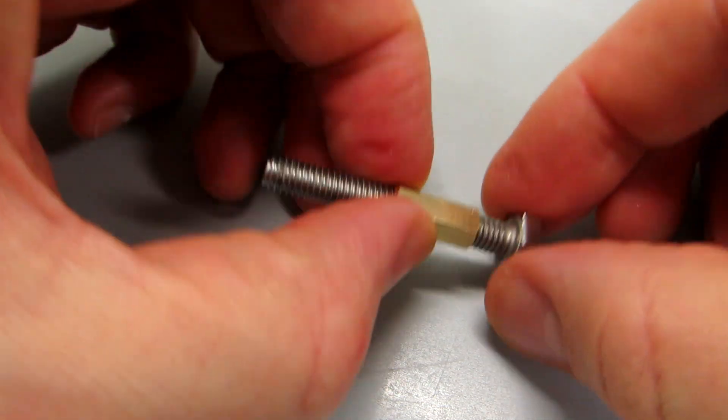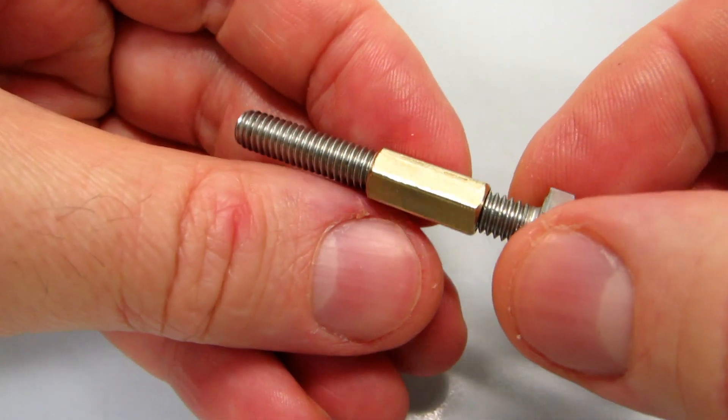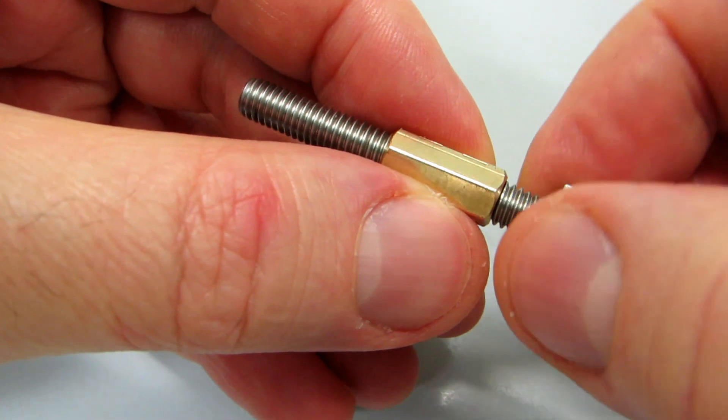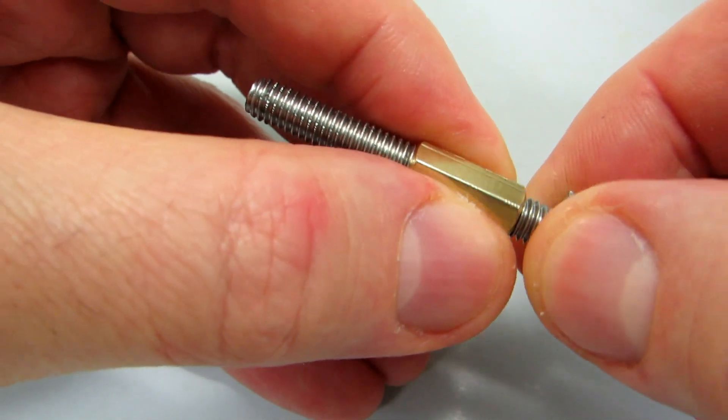Welcome to my impossible screw. This is a screw that can only be turned clockwise. When I turn it clockwise, it's running freely. When I run it counter-clockwise, it's locked.